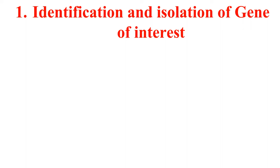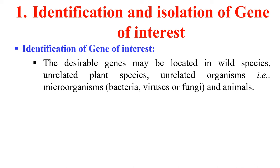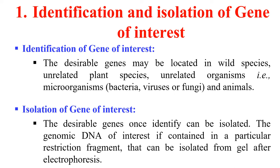First step: identification and isolation of genes. You have to identify the gene of interest — you may find that gene in some microorganism, some other plant, or animal species. After identifying your gene, you will isolate it. You isolate the DNA containing the gene of interest, generally using restriction enzymes and gel electrophoresis. By using these techniques, we can isolate our gene of interest.